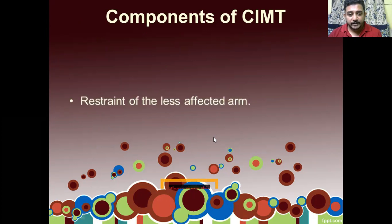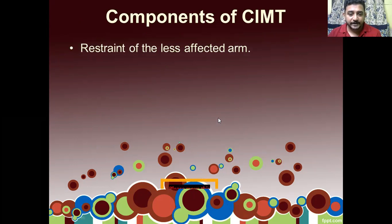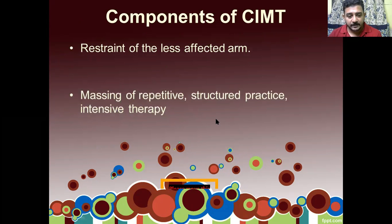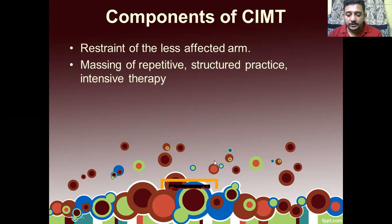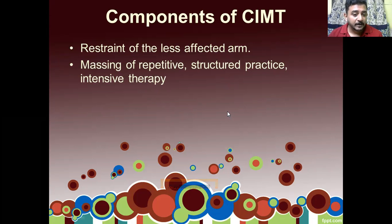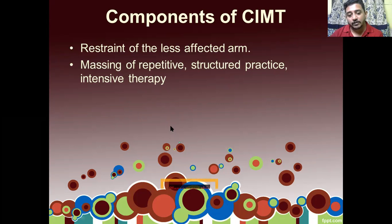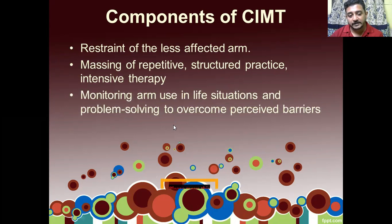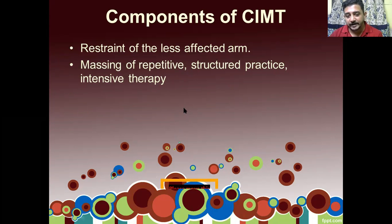The components of CIMT involve first restraining the unaffected extremity, after which the patient is induced to move the affected extremity. There should be massing of repetitive structured practice with intensive therapy. Massing of repetitive practice means giving the patient a good amount of repetition.